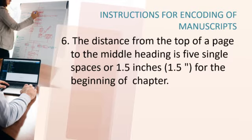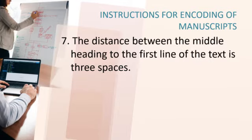The distance from the top of a page to the middle heading is 5 single spaces, or 1.5 inches, from the beginning of a chapter. The distance between the middle heading and the first line of the text is 3 spaces.